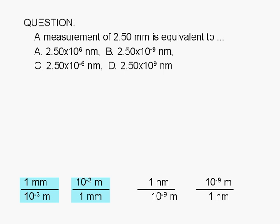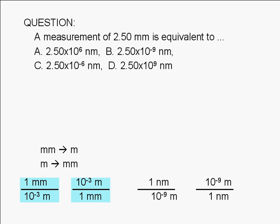Similarly, the prefix nano means 10 to the negative 9. We can write a conversion factor with 10 to the negative 9 meter in the numerator and 1 nanometer in the denominator. We can use these conversion factors to convert nanometers to meters or meters to nanometers.